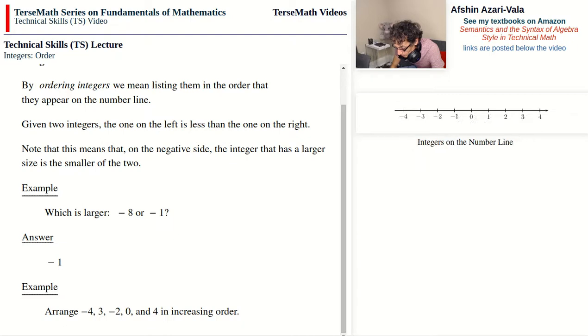Now the smallest number is the one that appears to the left of all the other numbers. In this case we have negative 4, and negative 4 is to the left of all the other numbers that are given to us, and therefore the list begins with negative 4. Following this we have negative 2, which is here, and then 0, 3, and 4.